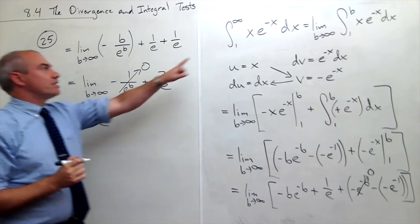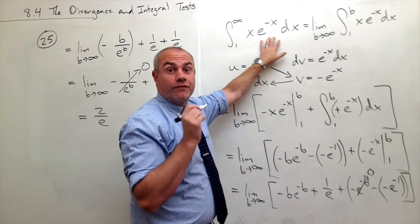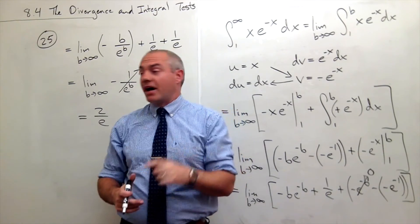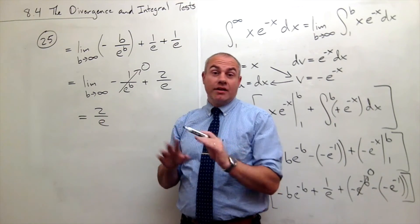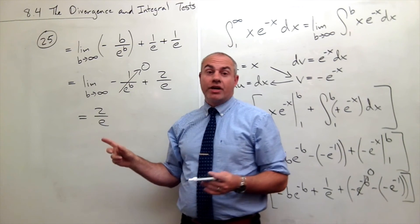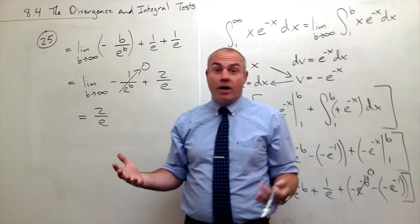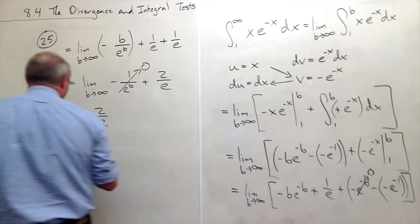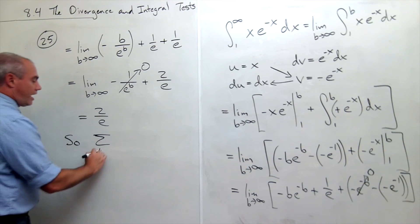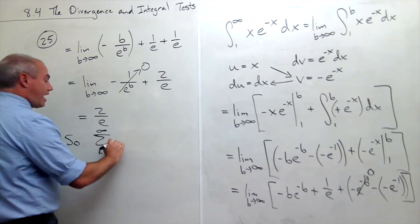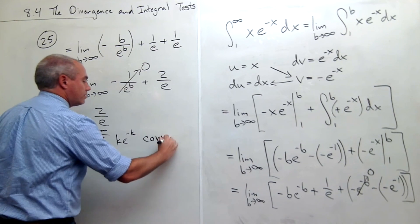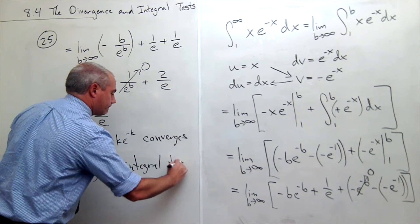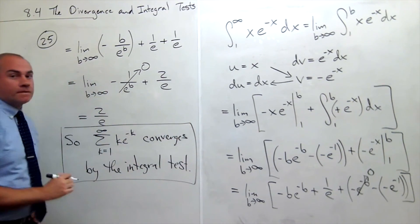That means this improper integral converges to 2 over e, which means my original series also converges. Something to be really careful about: that does not mean the series converges to 2 over e — that is not true in general. It will converge to something, but because of the integral test I can be sure it converges. So the sum as k goes from 1 to infinity of ke to the negative k converges, by the integral test.